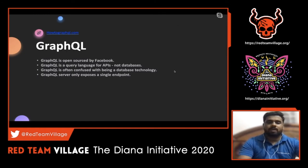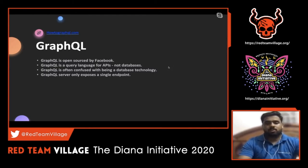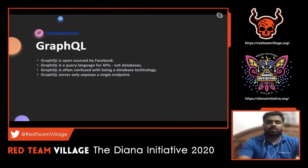Today we will discuss GraphQL and how an attacker can make use of GraphQL APIs to exfiltrate data from an infrastructure or backend application. GraphQL is a buzzword nowadays - it is an open source project from Facebook and is a query language for APIs. There is a common misconception that GraphQL is similar to SQL, but this query language is specifically for the API, not for databases. GraphQL server only exposes a single endpoint.